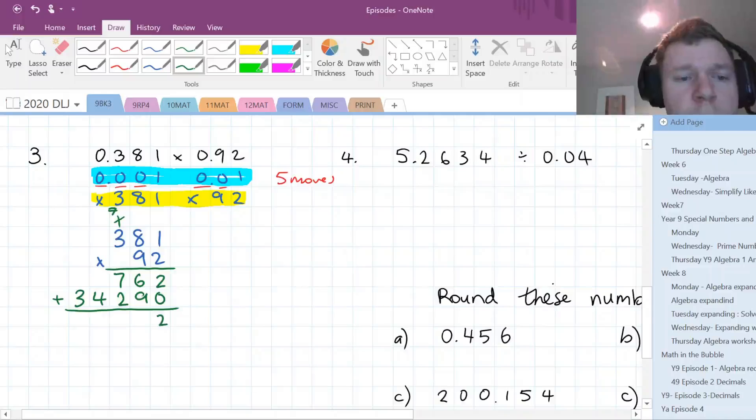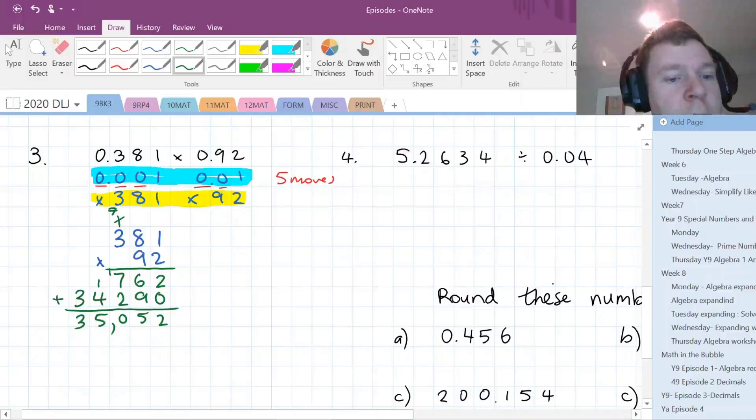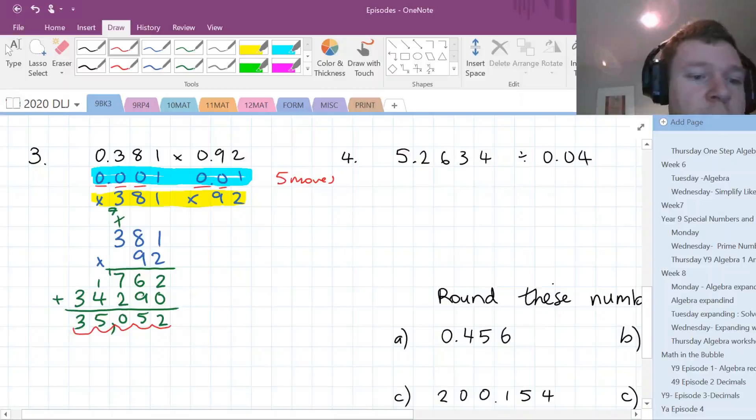Add those together. We're gonna get two and zero is two. Six and nine is fifteen. One and seven is eight, plus two is ten. Four and one is five. So we have 35052. And then we gotta move our decimal point. One, two, three, four, five. Zero point three five zero five two.